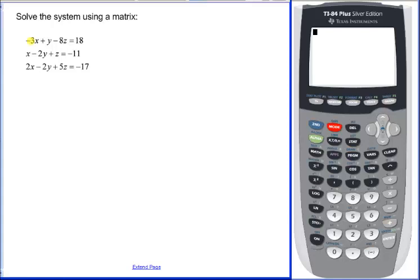And the first thing that we need to notice is that we've got these coefficients in front of the variables and on the right-hand side of the equal sign. And what these coefficients are going to do is fill in your matrix.